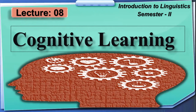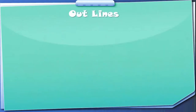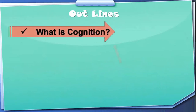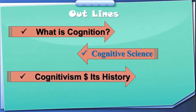Welcome to this lecture series program. Today we are going to talk about cognitive learning, also called cognitive science or cognitivism. This topic is from the schools of linguistics and is part of the introduction to linguistics, semester 2. Today's outlines are: number one, what is cognition; number two, cognitive science and cognitivism and its history.